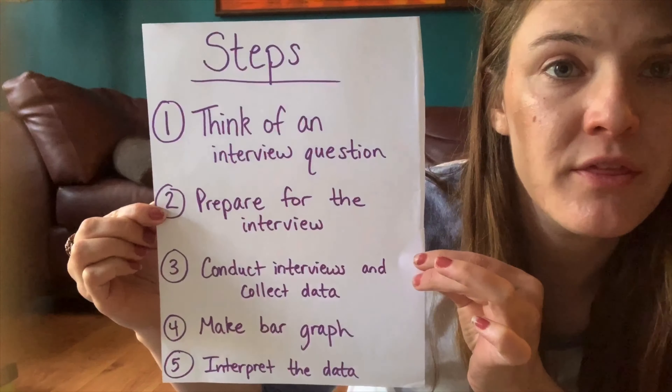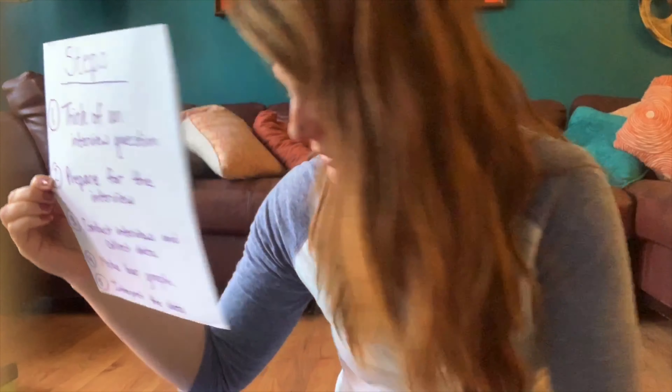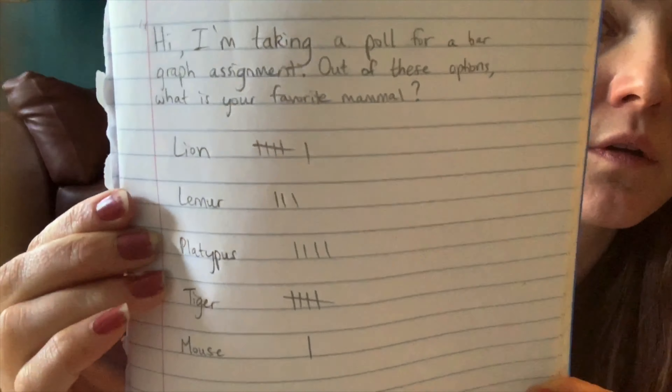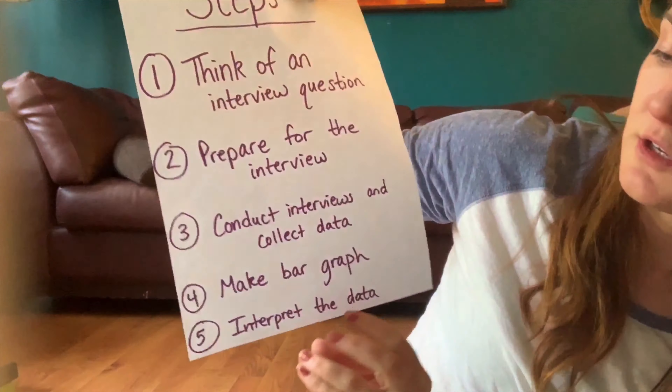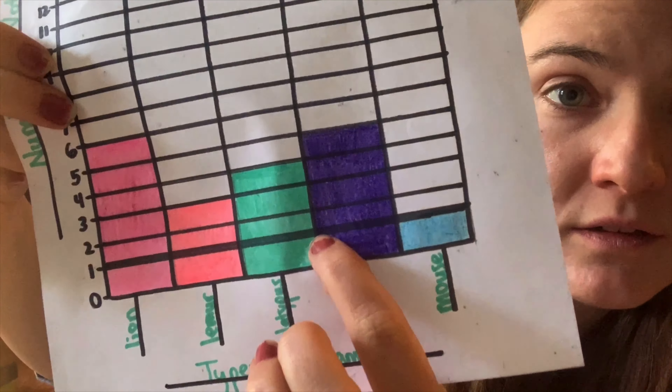So one last time, here are the steps. Number one: think of your interview question. Two: prepare for your interview — remember how I wrote it out. Three: conduct your interview and collect data. Four: make your bar graph. Five: interpret the data. And then a final note — your graph doesn't have to look absolutely perfect. Please do it yourself; please don't have a parent do it for you. This is your assignment and we know you're capable. If a line is a little wonky, that's okay. Make it yours. Have fun!